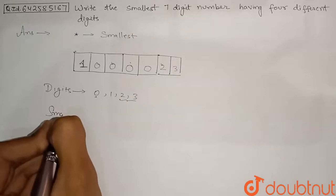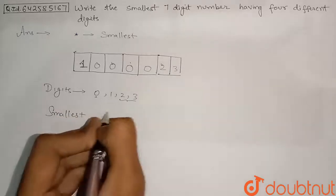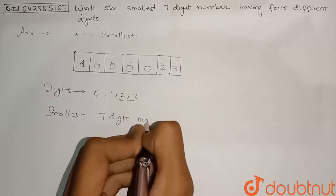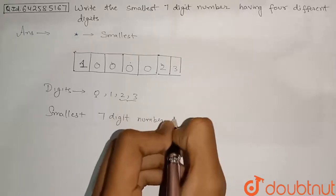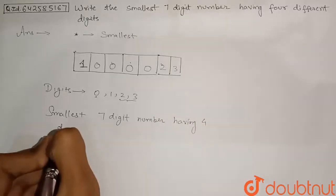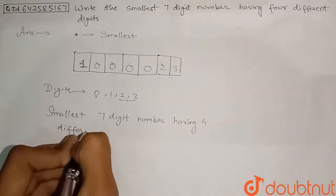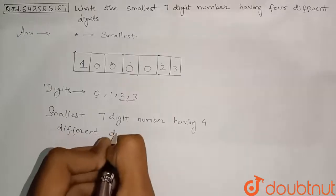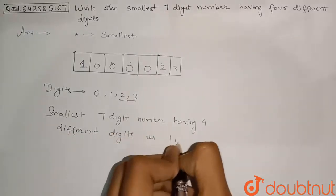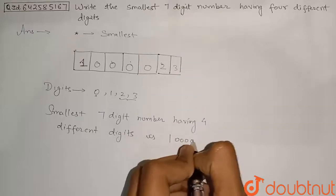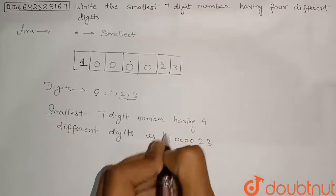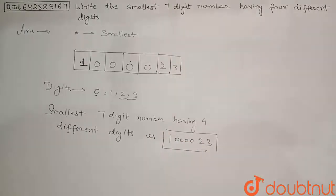So this is the smallest number. So we can write smallest 7 digit number having 4 different digits is this 1, 0, 0, 0 and 0 and this 2, 3. So 2, 3. This is the number. This is the required answer for this question. Thank you.